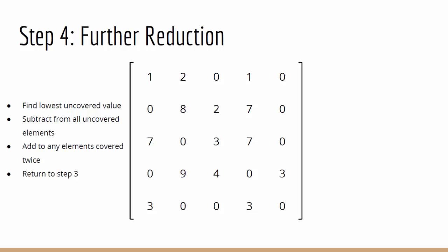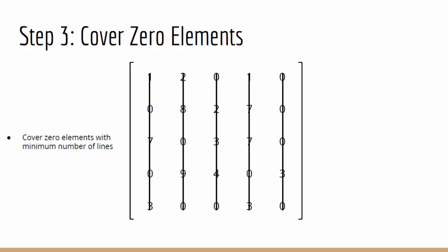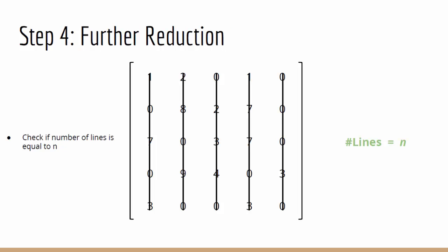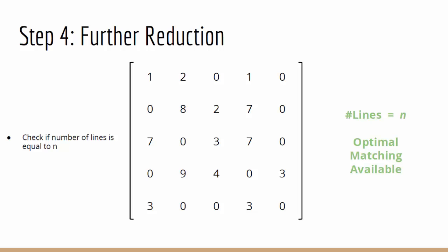Now, when we return to step 3 to cover our zeros, you can see that we are using 5 lines. This is equal to the number of rows in our matrix, so our value of n. That means an optimal matching is available.